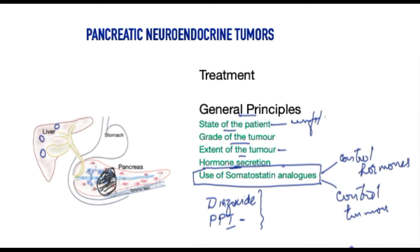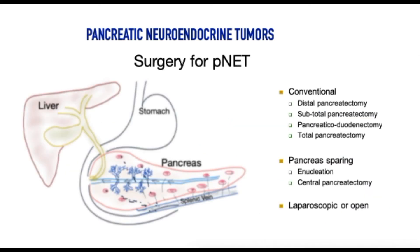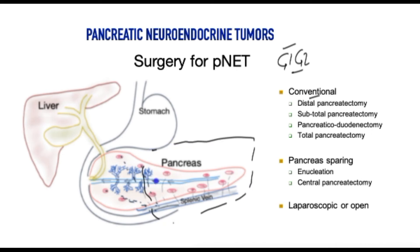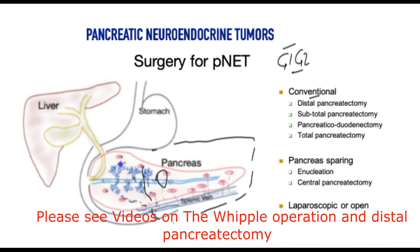Once a patient has been considered a good candidate for surgery, and for G1 or early G2 cancers, surgical therapy would prolong life. Conventional operations include removing the distal part of the pancreas, called distal pancreatectomy, or a pancreaticoduodenectomy, where the tumour is located in the head of the pancreas.